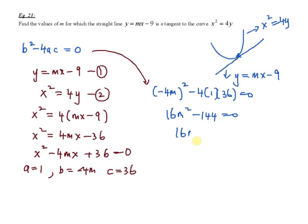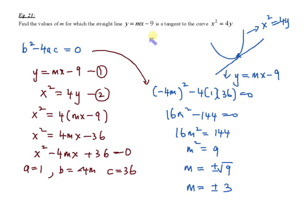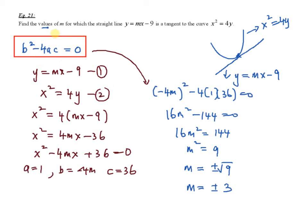Very simple. You have 16m squared equals 144, so m squared equals 9, giving m equals plus or minus 3. Remember, for a square root you must give both positive and negative answers. So if the straight line is a tangent to the curve — meaning it only intersects at one point — the condition is b squared minus 4ac equals 0, and therefore you can find the exact values of m. Let's move on to the next example.